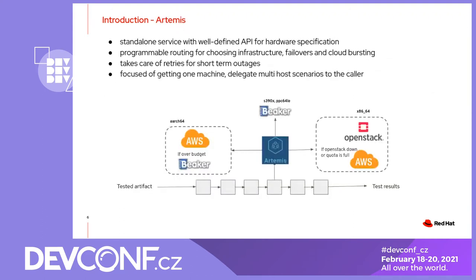To tackle all these problems, we created a service we call Artemis. It's a standalone service with a well-defined API and hardware specification. It has programmable routing — you can program how it will choose the infrastructure and how it will do failover and cloud bursting according to your needs. It also takes care of short-term outages; in Red Hat, as we use OpenStack, sometimes it returned 500 from the API but in the next retries it worked. This retry logic is something Artemis handles transparently.